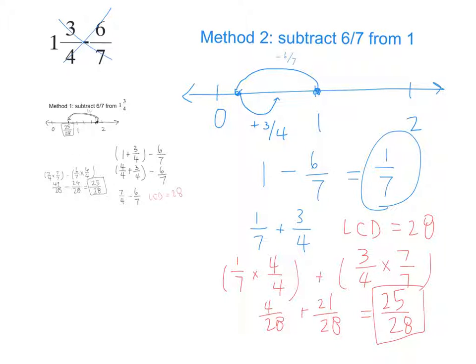Do we get the same answer with method 1 and method 2? So when we can solve one problem in two different ways and get the same answer, does that confirm that we were correct? Very good.